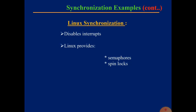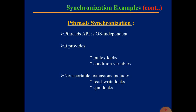An interrupt is a signal sent by I/O devices. Linux also provides semaphores and spin locks. For Pthreads synchronization, the Pthreads API is operating system independent. It provides mutex locks and conditional variables. Non-portable extensions include read-write locks and spin locks. These are some examples of synchronization.